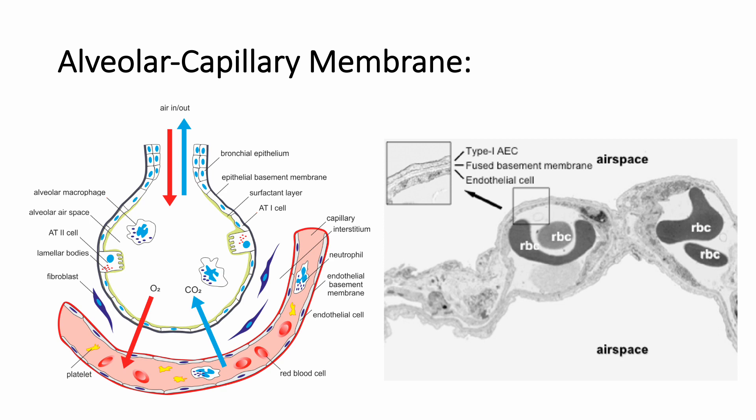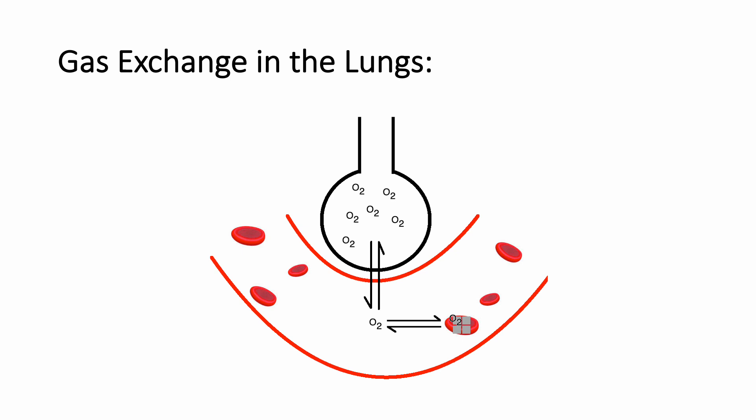At the level of the alveoli, the inspired air is given a chance to be exposed to the blood due to the incredibly thin membrane that separates the contents of the alveoli from the contents of the pulmonary capillaries. This membrane is termed the alveolar capillary membrane, which is shown here in cartoon form on the left, alongside an electron micrograph of the same structure on the right. The red and blue arrows correspond to the movement and diffusion of oxygen and carbon dioxide, respectively. Under normal circumstances, oxygen is free to diffuse across the membrane into the blood within the pulmonary capillaries, where it can then be picked up by hemoglobin in the red blood cells and carried around the body to supply the tissues in need.